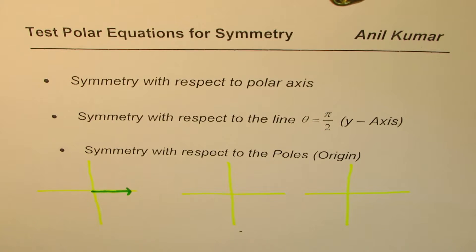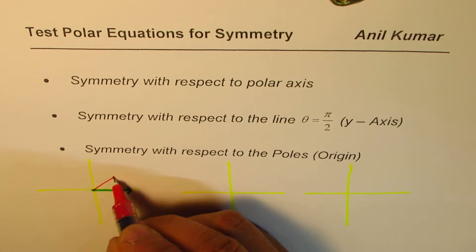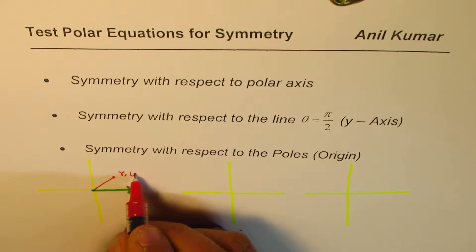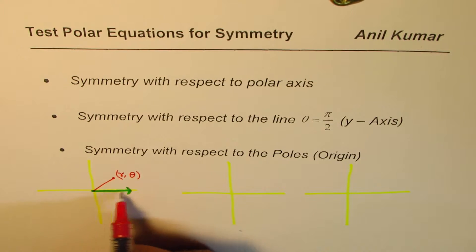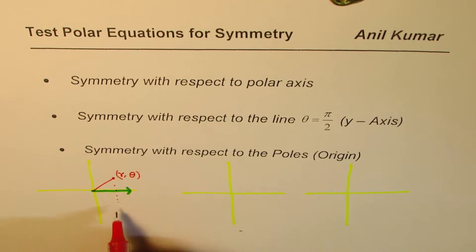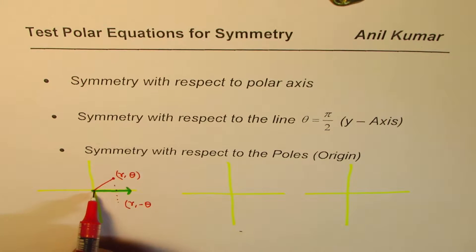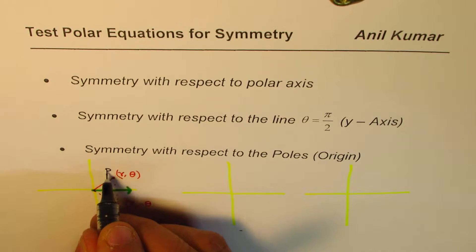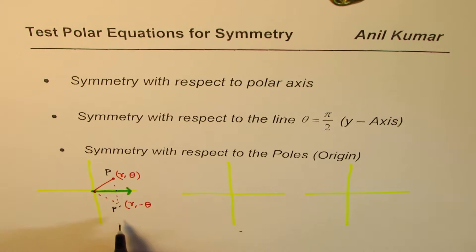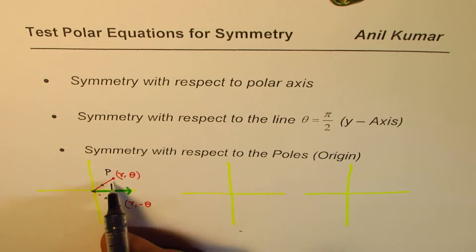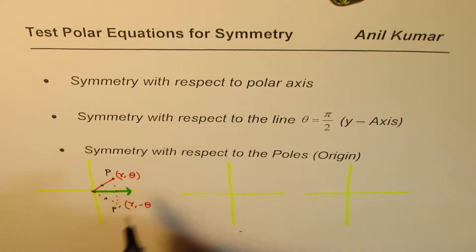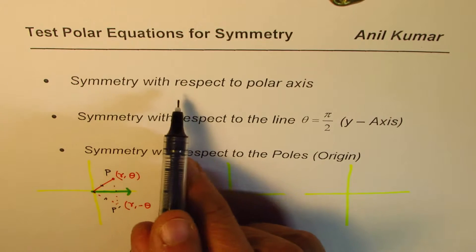If I have a point P represented as (r, θ), then its reflection on the polar axis is the point given as (r, -θ). Let's call the original point P and its reflection P'. We can see that (r, θ) and (r, -θ) are reflections on the polar axis.